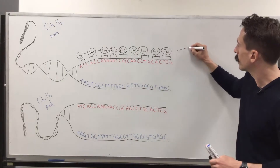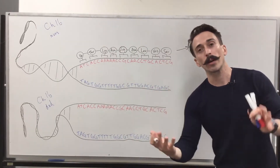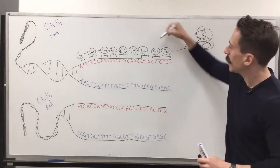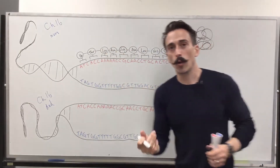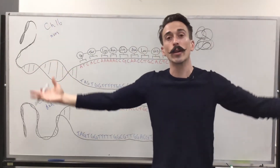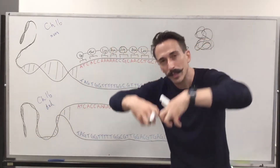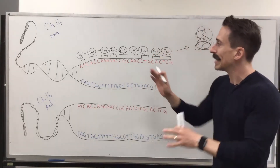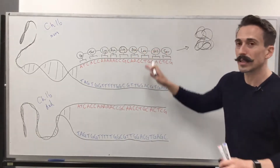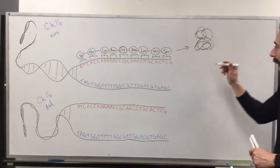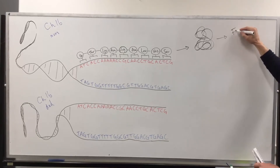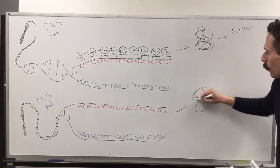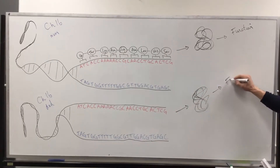We know that amino acids fold spontaneously into three-dimensional structures called proteins, and the way that they fold is determined by their characteristics or personalities. Some amino acids like water so they want to be exposed to the aqueous environment; some hate water so they want to bury themselves deep into the protein; some have a positive charge, some have a negative charge, and so forth. What that means is the personalities of each amino acid will spontaneously fold that protein accordingly and that protein should have a function. As you can see we've got two of the same copy that folds the same protein and results in the same function.